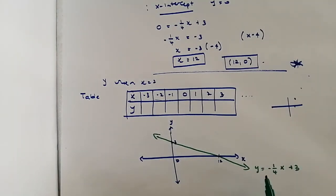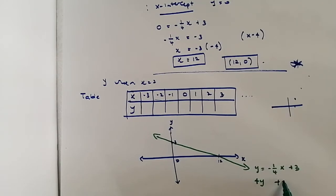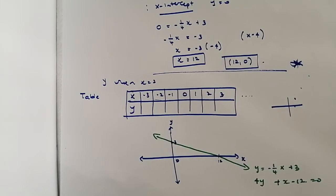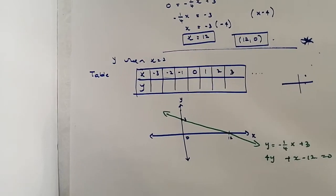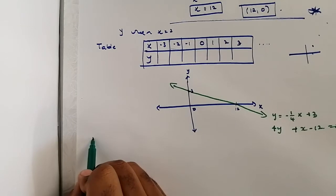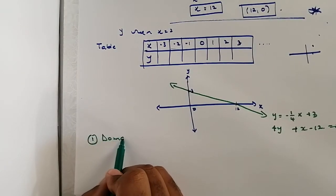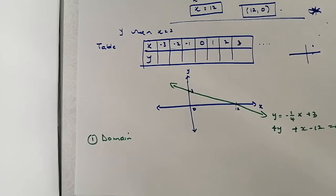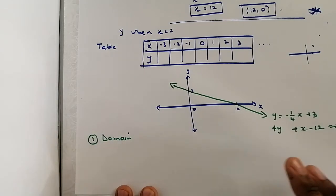This is the equation of the line, and it can also be written as 4y + x - 12 = 0, which is essentially the same thing. So this is how you plot the equation of a straight line or a linear function. Now I'd like to bring a few more things to your attention — they may ask you to find the domain.